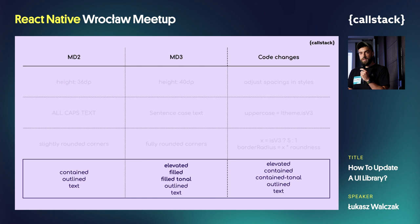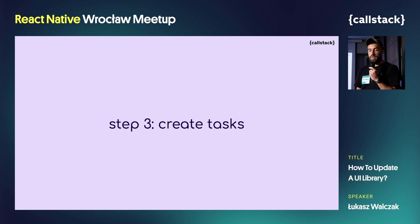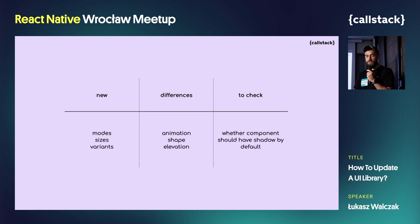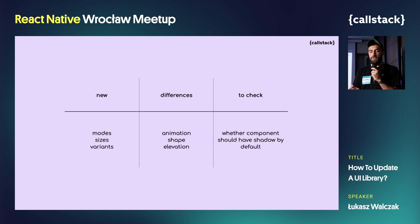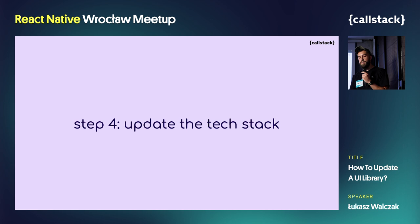Several components received new variants or modes, so we discussed how to adjust their naming — looking for a compromise between Material Design documentation and our codebase. Based on the button example, three new types were introduced: elevated, filled, and tonal. Since the filled type replaced what was previously known as the contained button, we decided to stick to that name, and that's why filled tonal received the name contained tonal. Based on the collected data, we created a task for each component, with changes grouped in three sections: new (for new modes, sizes or variants), differences between versions, and a to-check section for aspects requiring more investigation. Before refactoring began, we refreshed the tech stack by updating TypeScript, Expo, and Navigation.